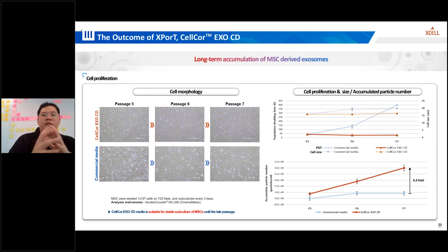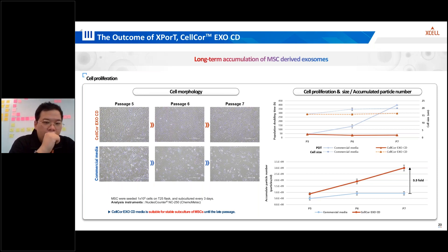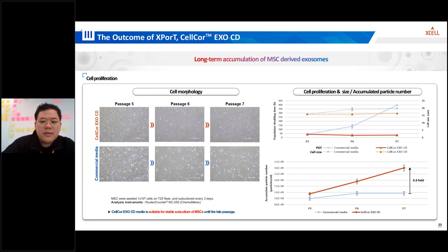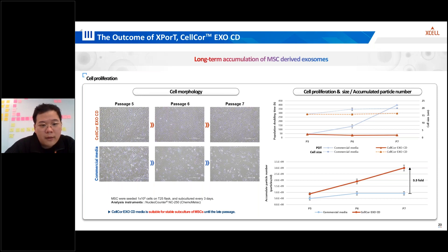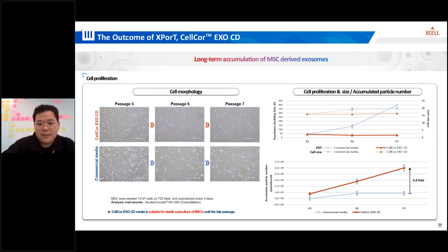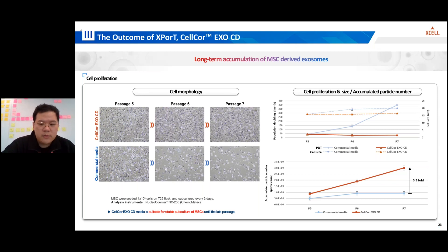Long-term accumulation of MSC-derived exosomes is very crucial for sustainable supply production. MSCs were seeded in different media formulations and subcultured every three days. This analysis investigates that CELCO XCD is suitable for stable subculture even until late passage — in our in-house data, our cells are stable until passage 10 without senescence. This capability ensures the continuous production of mesenchymal stem cell-derived EVs over an extended period, supporting long-term research and therapeutic applications.